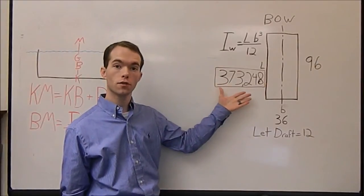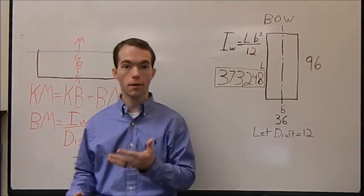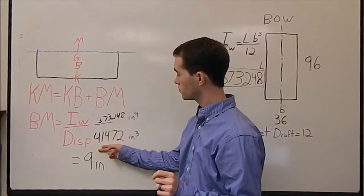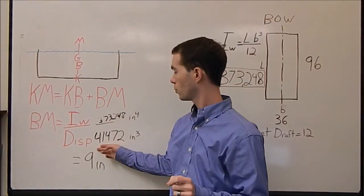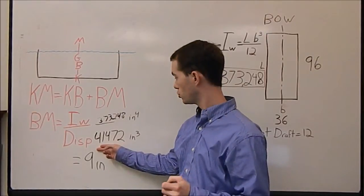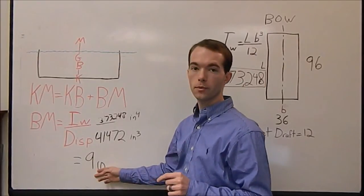Now, this is in inches to the fourth because we left everything in inches. So, we simply plug that into our equation over here. Displacement was 36 by 96 by 12, which is 41,472. So, BM, this distance from here to here, is going to be exactly 9 inches.